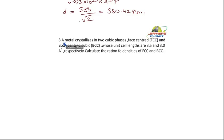A metal crystallizes in two cubic phases, FCC and BCC, whose unit cell lengths are 3.5 and 3 angstrom respectively. Calculate the ratio of densities of FCC and BCC.